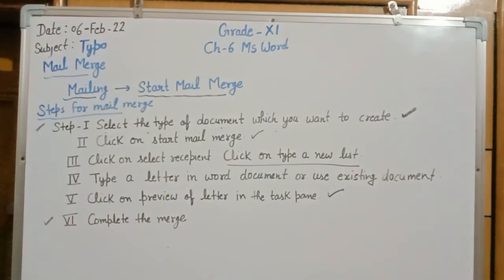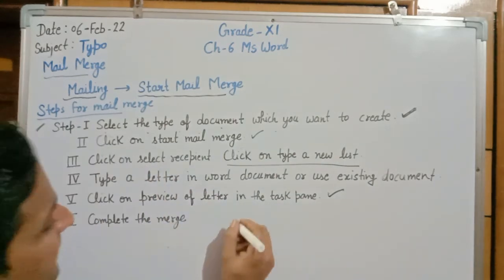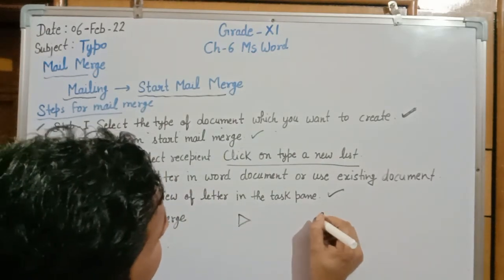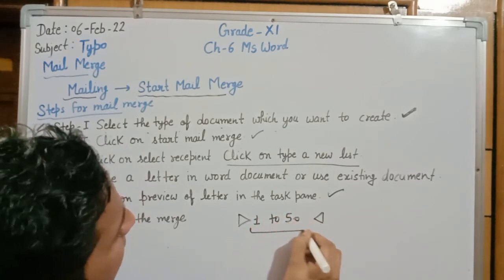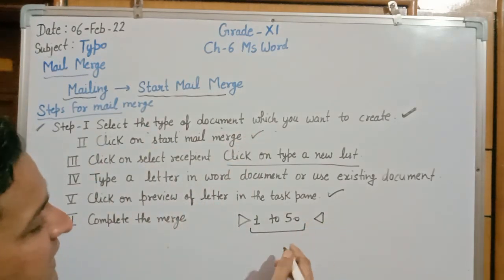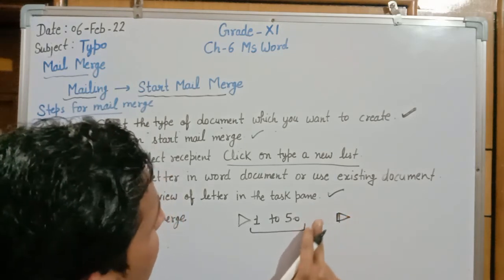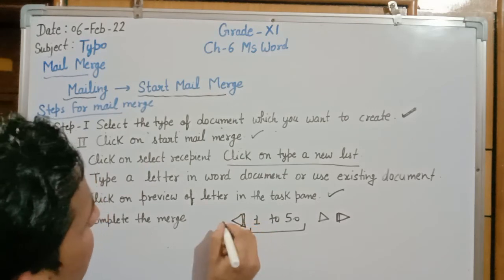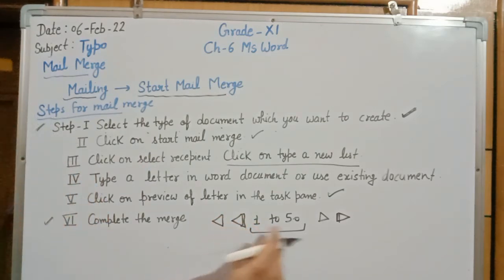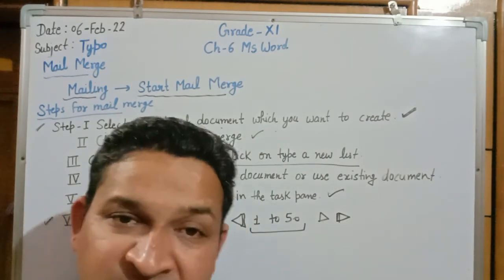The sixth step is to click on Complete the Merge. When you complete the merge, a list of letters will be prepared — for example, 50 letters with each recipient's address filled in fields 1 to 50, while the letter body remains the same. You can navigate forward, backward, to the first, or to the last letter. The document list is displayed one by one and is ready to share.